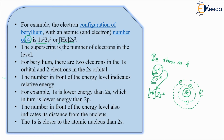The superscript is the number of electrons. What do we mean by superscript? Superscript is the number which is at the top. So the numbers at the top become the number of electrons in the level. For beryllium, there are two electrons in the 1s orbital and two electrons in the 2s orbital. The number in front of the energy level indicates relative energy. The electrons in the 1s orbital will have lesser energy as compared to the electrons in the 2s orbital.